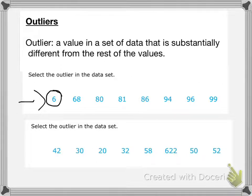For the one right below it, we have a set of data here: 42, 30, 20, 32, 58, 622, 50, and 52. Most of these values are between 20 and 58. The one that is really far away, that 622, is our outlier. It's really far away from the rest.